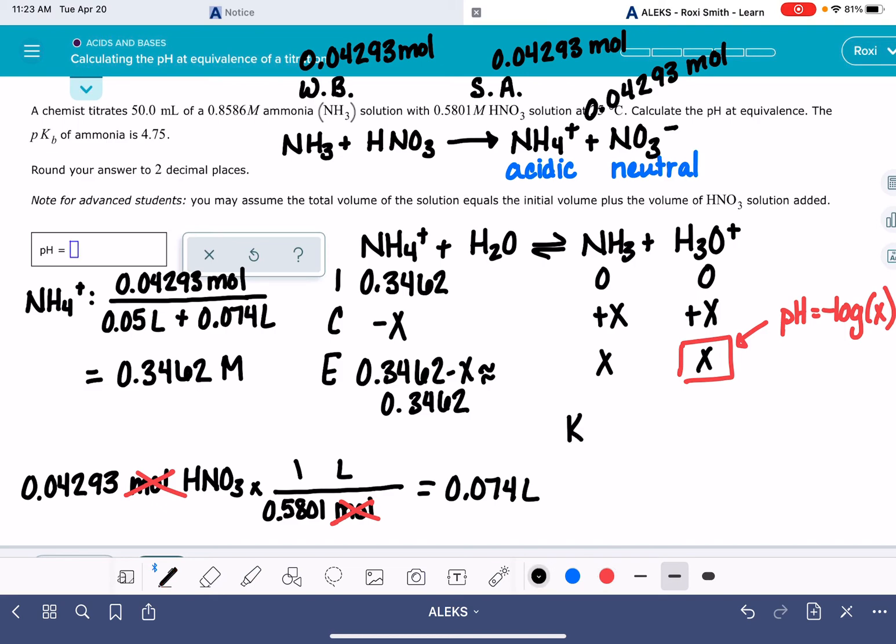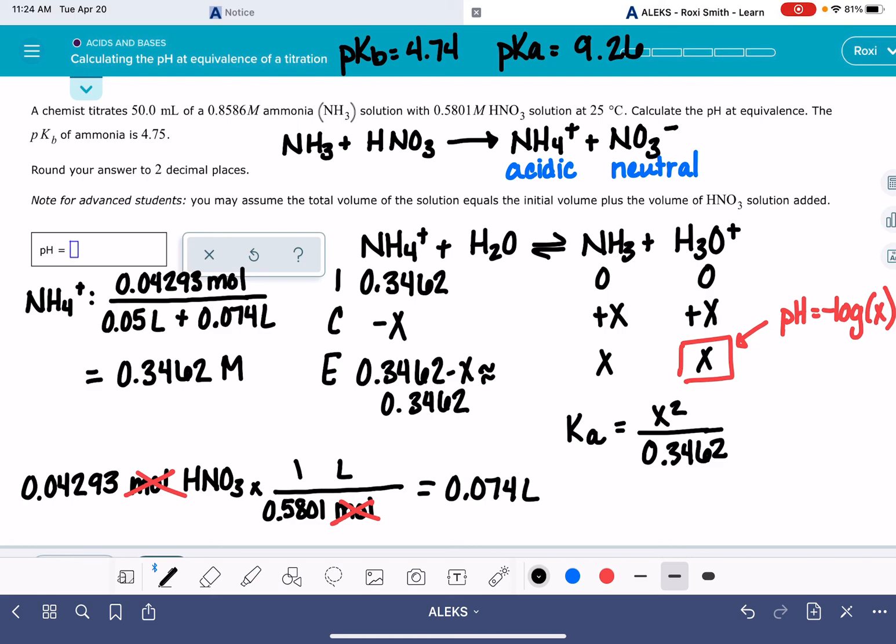We're trying to get the pH, which is the negative log of H3O+. So we have to solve for x. Let's write an equilibrium expression. This is going to be Ka because this is an acid. Ka is our products, x and x, divided by our reactant, 0.3462. We just need to know what Ka is. Wouldn't it be nice if Alex just gave us Ka? But of course not. We've got a pKb that we have to convert into a Ka. pKb is 4.74. Remember pKa plus pKb is 14. So pKa is 9.26. And Ka is 10 to the negative pKa. So our Ka is 10 to the negative 9.26.